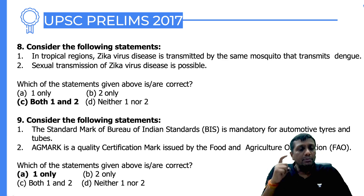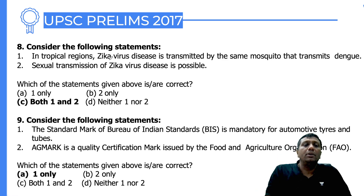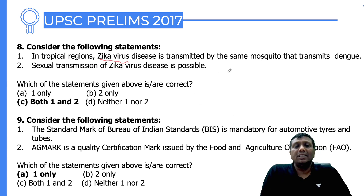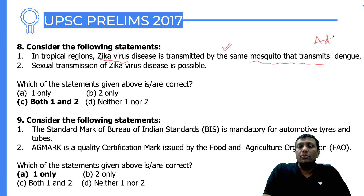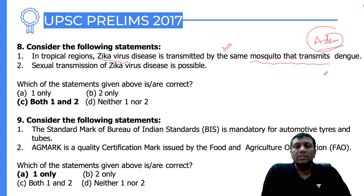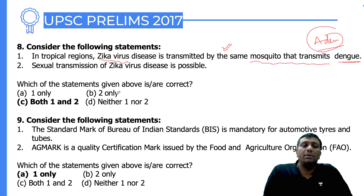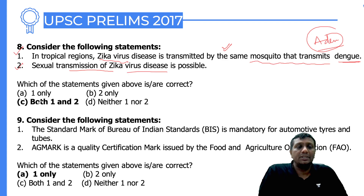The next question is from health and disease, specifically about Zika virus. In tropical regions, Zika virus disease is transmitted by the same mosquito that transmits dengue — the Aedes mosquito. This is a conceptual question UPSC made cleverly, noting that both dengue and Zika are spread by Aedes mosquitoes. It is also reported that Zika virus can be transmitted sexually as well.